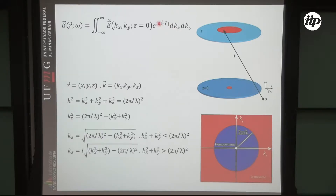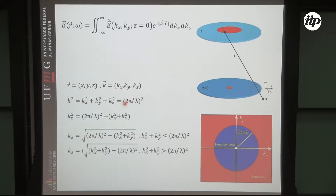The near field of this is associated with the k-vectors of light — the spectrum of k-vectors of light. This is the wave number of light, which is basically given by 2 pi over lambda. This is the k of light. So you have light with some wavelength lambda, and the wave vector — the modulus — the norm of this wave vector is 2 pi over lambda.